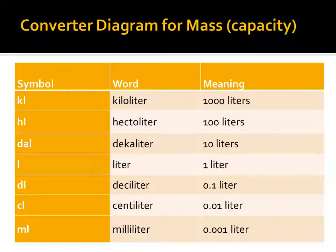Now we have the converter diagram for capacity or volume. For length we use meters, for mass we use grams, and for volume or capacity we use liters. The volume units are: kiloliter, hectoliter, dekaliter, liter, deciliter, centiliter, and milliliter. The structure is the same as for mass and length — the only difference is the unit used.